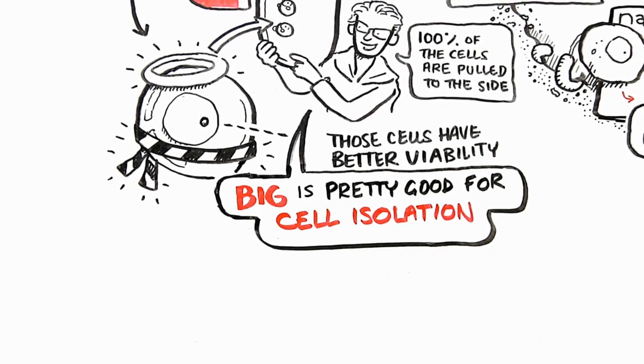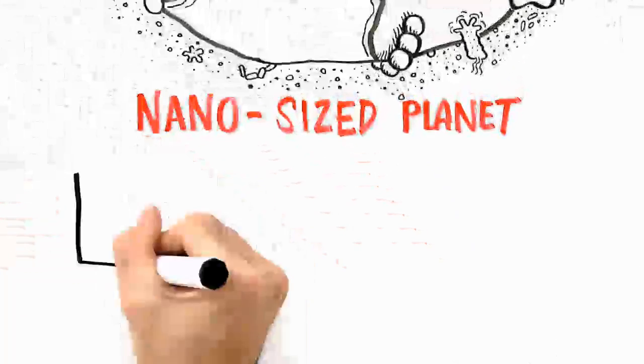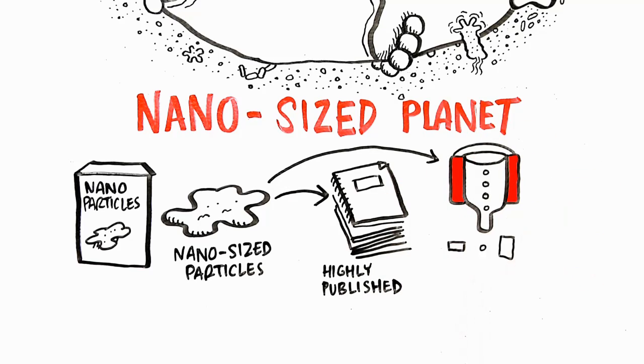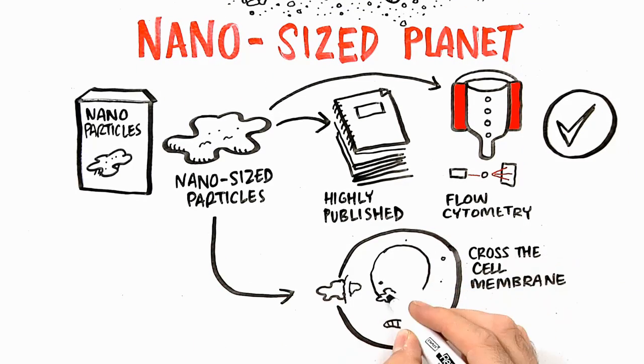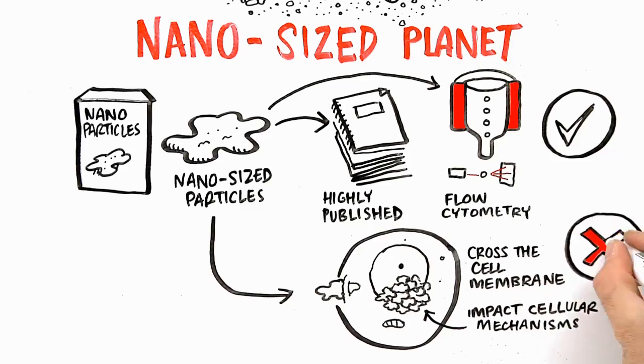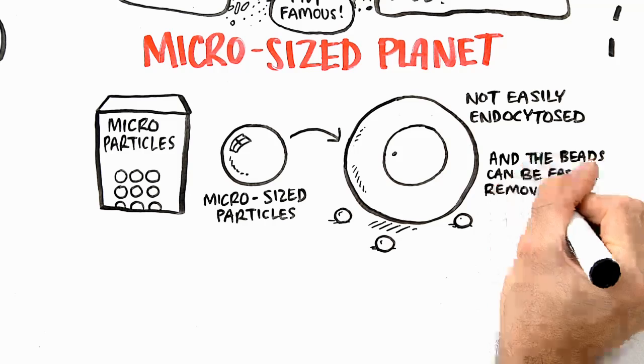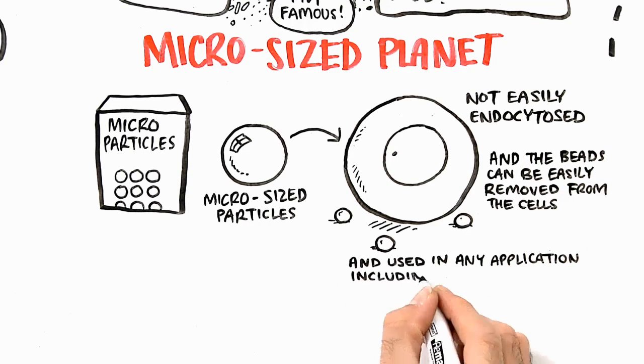So, here is where cell isolation is. Two planets, one nanosized and one microsized. Both have their advantages and disadvantages. Nanosize particles have been highly published, and historically, this was the only technology that worked well with flow cytometry. But nanoparticles cross the membrane and have been demonstrated to impact cellular mechanisms. Microsized particles are not easily endocytosed, and the beads can be removed from the cells, and then their cells can be used in any application, including flow cytometry.